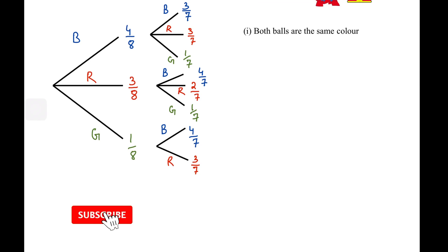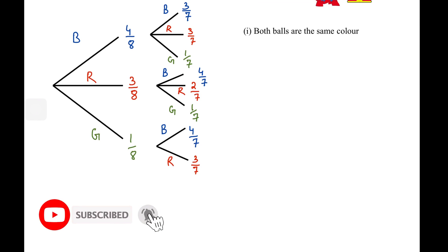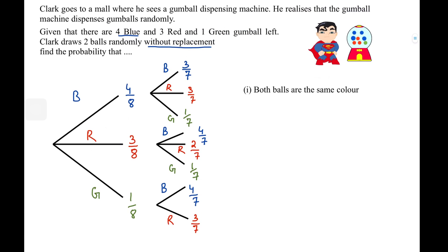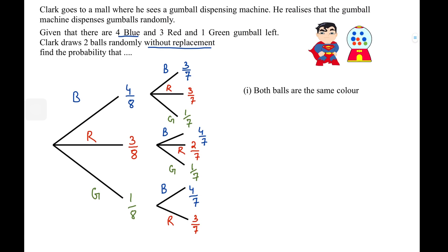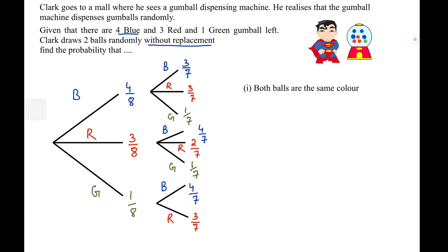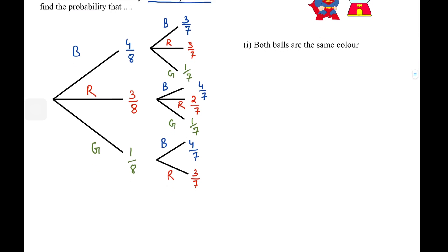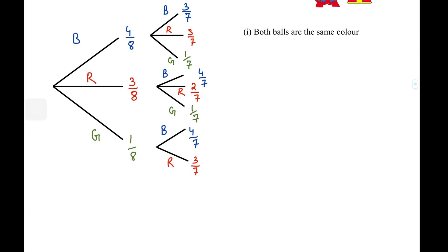As I said in the last video, I'm going to be bringing questions that the examiner might ask in a scenario like this. So here's one question. I'm sure you guys remember what we did in the last video. Now you have to find out the probability that both balls are the same color.